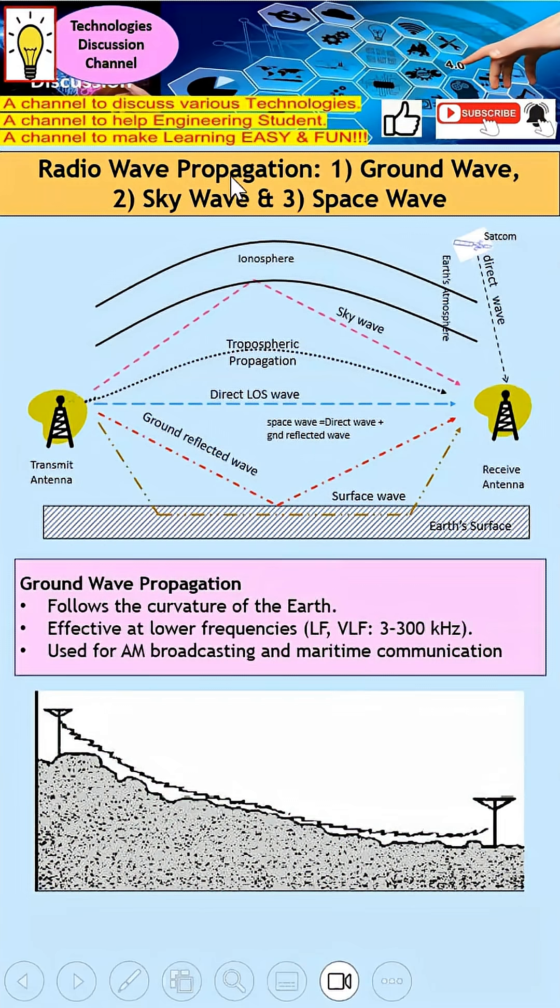Next is sky wave. As you can see from this diagram, sky wave transmission bends into the sky and propagates. When it reaches the ionosphere, due to different density, the wave bends and returns back to Earth to reach the receiving antenna.